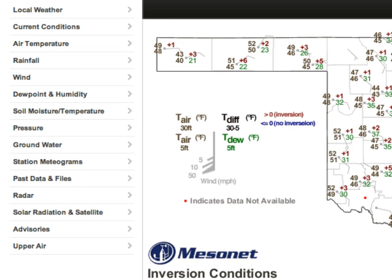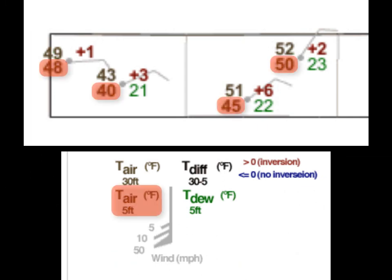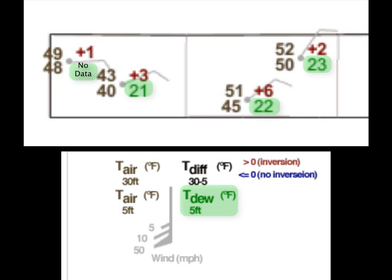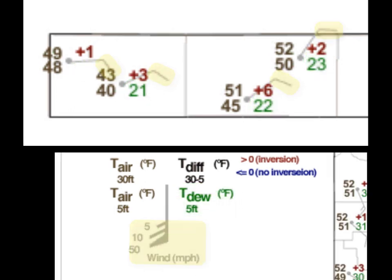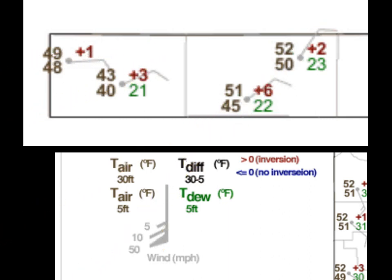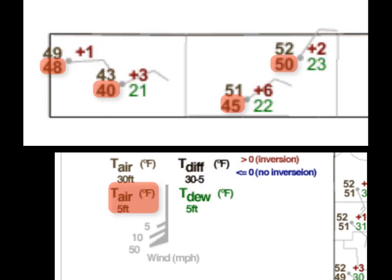Each Mesonet site on this map contains five observations: temperature at 5 feet, temperature at 30 feet, dew point, wind speed, and wind direction. On the upper right hand side of the station plot you'll find inversion information. This information is obtained by subtracting the air temperature at 5 feet from the air temperature at 30 feet. If the difference is positive, an inversion exists and it is shown in red. Otherwise, the difference is a blue number and the temperatures are getting cooler with height.